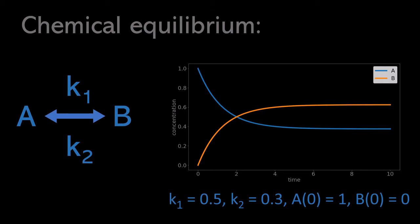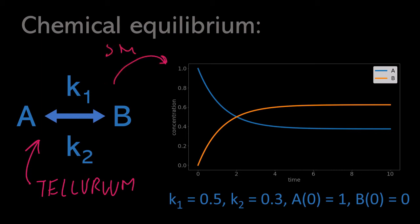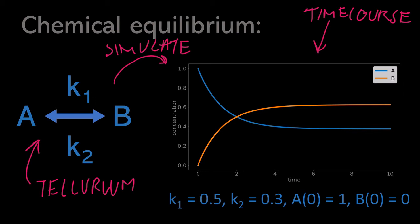To show visually what a system in chemical equilibrium might look like, we've taken a reversible reaction between species A and B and created a model using software called Tellurium. This allows us to simulate the model and generate a time course output describing how species A and B are changing in time. Under the parameter regime defined in the model, we do get a chemical equilibrium between species A and B, visible at the end of the time course where the species concentrations are no longer changing in time — meaning the system has equilibrated.